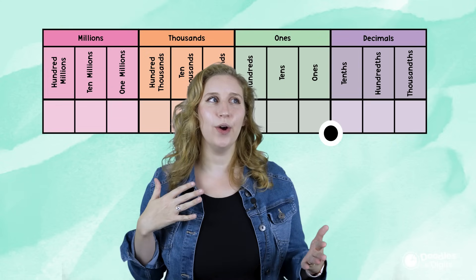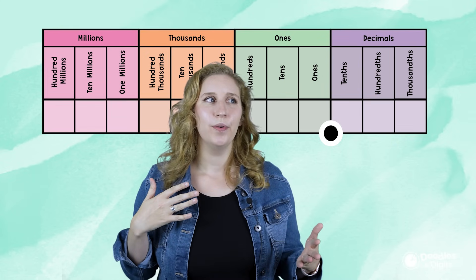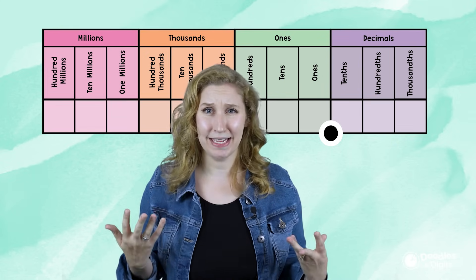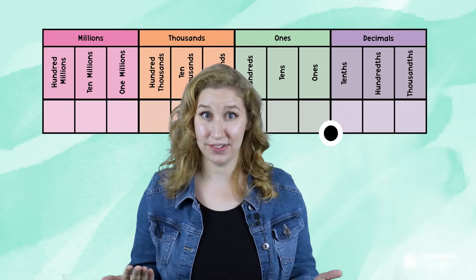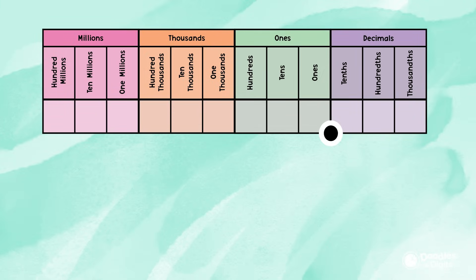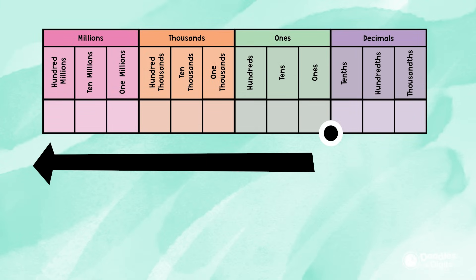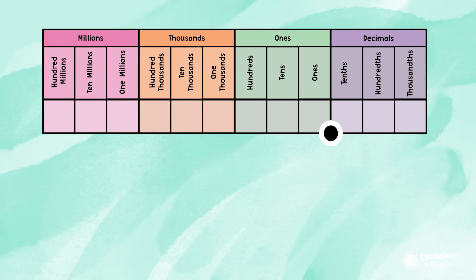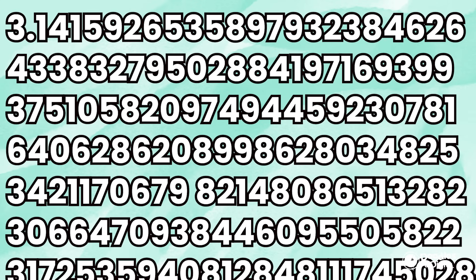How many place values are there for decimals? Just like how whole numbers can get larger and larger and go on indefinitely, so can decimals. Decimals can also go on and on indefinitely. One decimal you might have heard of that does this is the special decimal pi.